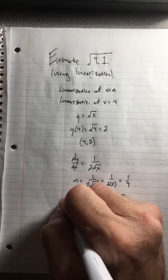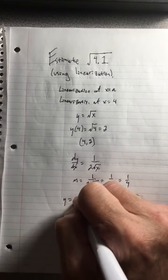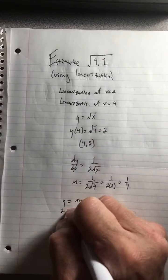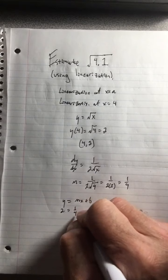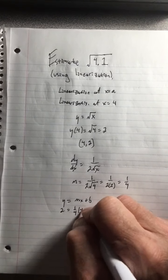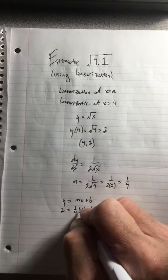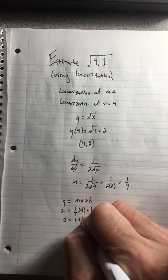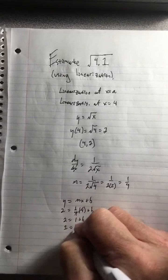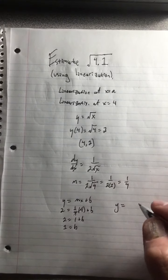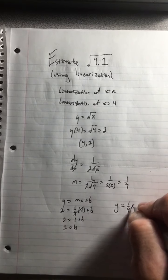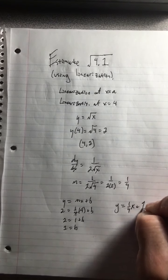And then how do I get the tangent line? Well, you just plug into this formula. Plug in a y value, which we have is 2. Plug in an m value, which we have is 1/4. Plug in an x value, which is 4 plus b. This becomes a 1. Subtract the 1 over. So we have 2 equals 1 plus b, and we get 1 equals b. And so our tangent line is y equals the slope 1 fourth x plus 1.